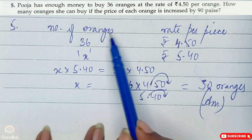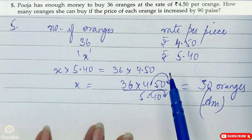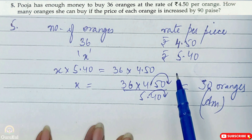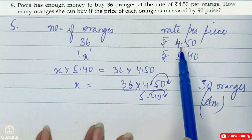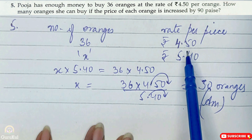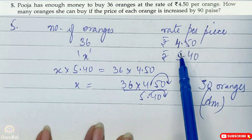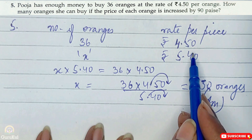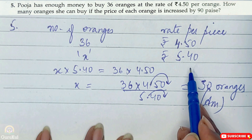Now how many oranges can she buy if the price of each orange is increased by 90 paise? So we need to add Rs. 0.90 to Rs. 4.50, which gives us Rs. 5.40.